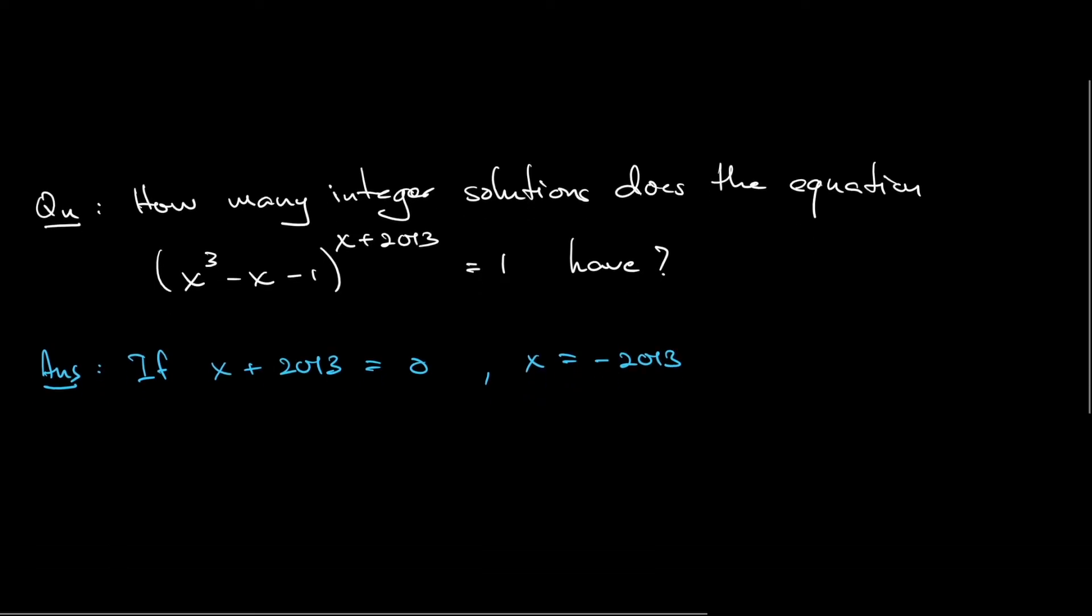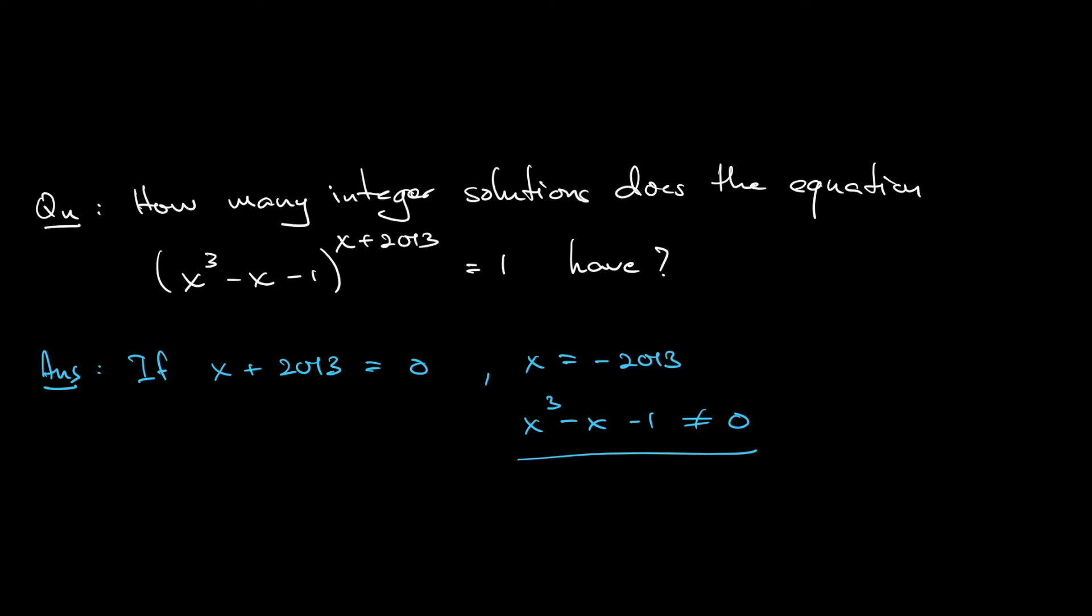And to be precise, we need to check when x equals negative 2013, is x cubed minus x minus 1 equal to 0 or not? And obviously this will not be 0, right? So that means x equal to negative 2013 is one of the solutions. Why do I need to check if this is 0 or not? Because if this is 0, I cannot take as a root because 0 to the power of 0 is undefined, okay? It cannot equal to 1.